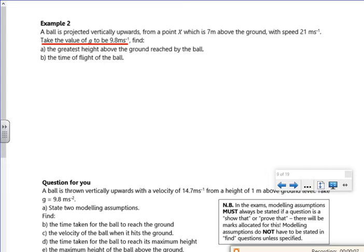So a ball is projected vertically upwards from point X, which is seven metres above the ground. Right, so I've got the ground. I've got seven metres. There's the particle ball. It's been fired up. So I'm taking upwards as my positive direction, which means gravity is acting against it and the floor is below it.